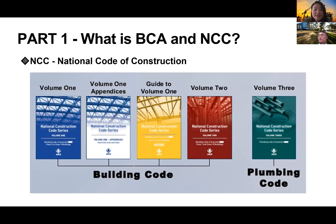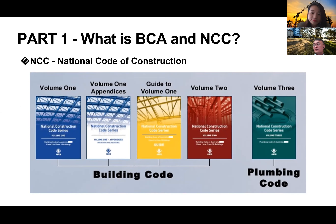So what is BCA or NCC? The full name of BCA is Building Code of Australia, and it has two volumes. Since 2011, the BCA changed its name to NCC, which is National Construction Code, and it has three volumes including the Plumbing Code. The government made it free online since 2015. In the past, practices had to buy hard copies every year.